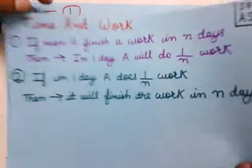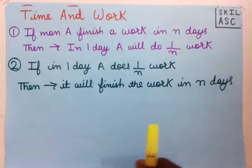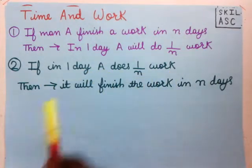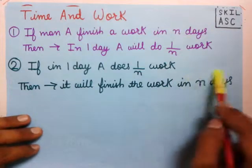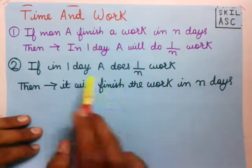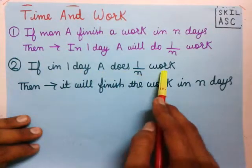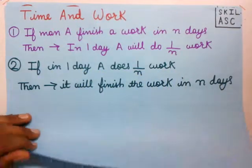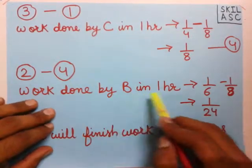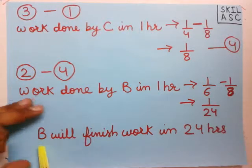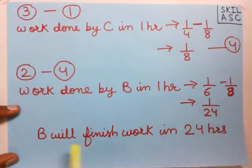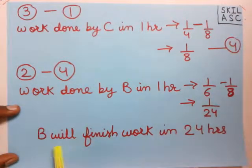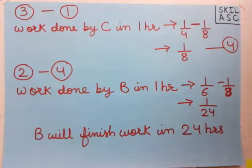Now let us see rule number 2 about time and work. Rule number 2 says that if in one day A does 1/N work, then A will finish the work in N days — we take the reciprocal of 1/N to get N days. Here, work done by B in one hour is 1/24, so B will finish the work in 24 hours. That's how we solve the question. I hope you understood this. Thanks for watching.